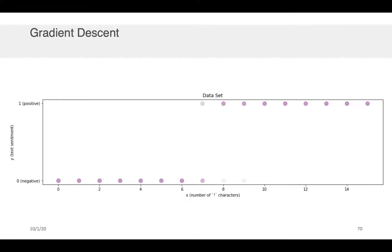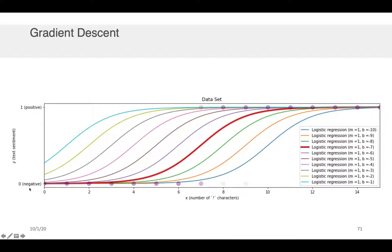So visually, the way that would look is, let's assume we had a data set that looked something like this. This is just a Python plot of the same example that we discussed earlier. I've got x here as the number of exclamation mark characters in some example text. And then y here is, for example, the sentiment of the text where 1 is positive and 0 is negative.